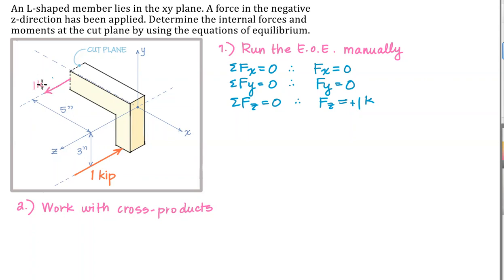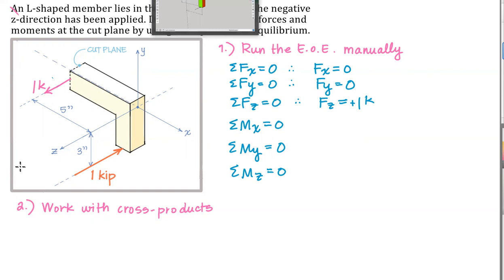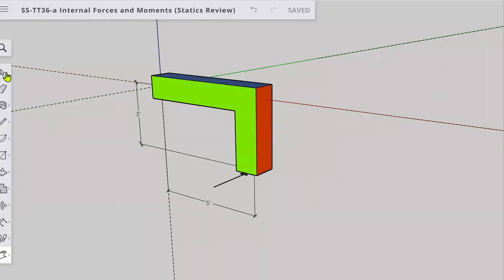So now we've got a one-kip force back at the cut plane, and the other two are zero. Now we get to do our moment equations. We want to do a moment summation with respect to x, with respect to y, and with respect to z. To help you visualize these, I made a little SketchUp model — so check your x's, y's, and z's as we go into the CAD model.